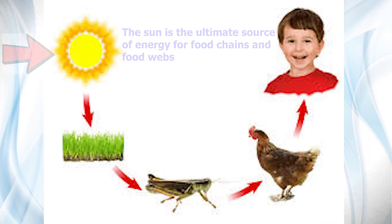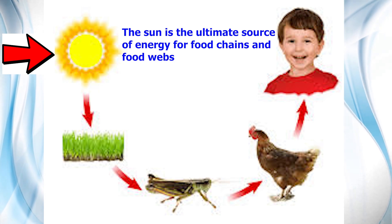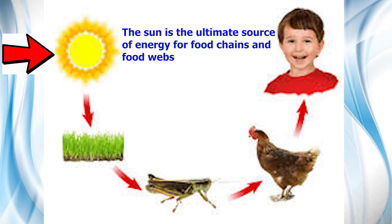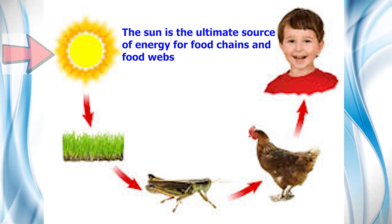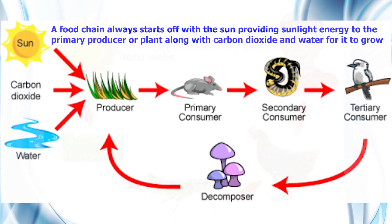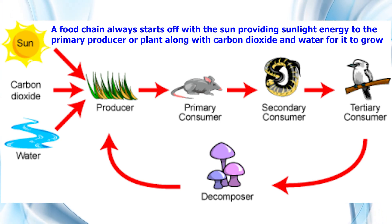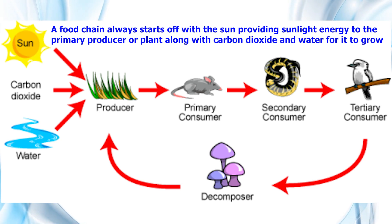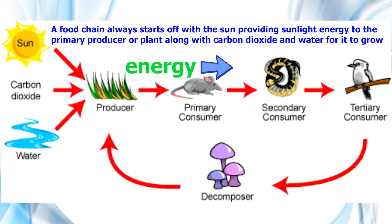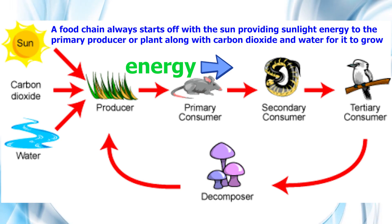If you take a look at the following food chain, you will notice that the sun is the ultimate source of energy for this food chain, like it is with all other food chains and food webs. A food chain always starts off with the sun providing sunlight energy to the primary producer or plant, along with carbon dioxide and water for it to grow. The arrows on the food chain and food web represent the direction in which energy is flowing from one organism to another.